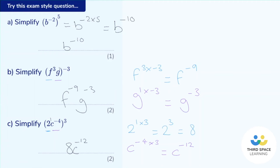Let's see where those marks come from. One mark for Part A — the answer. Two marks for Part B: one mark for each term. And for Part C, again one mark for each term.